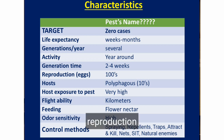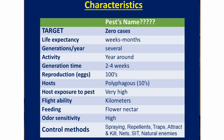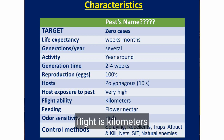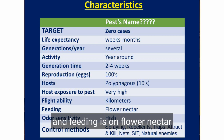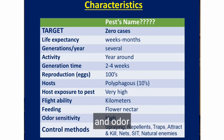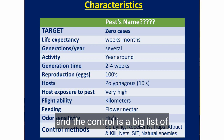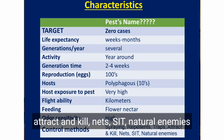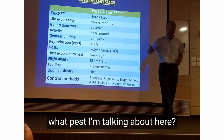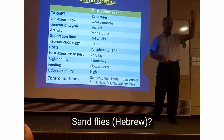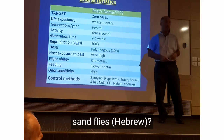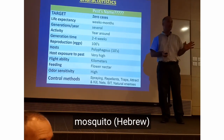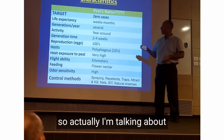Reproduction is hundreds of eggs per female, many hosts, the ability to protect the host is very difficult, flight is kilometers — even tens of kilometers — and feeding is on flower nectar. The pest insect is very sensitive to odor, and the control list is long: spraying, repellents, traps, attract-and-kill, nets, SAT, natural enemies. Do you want to guess what pest I'm talking about?